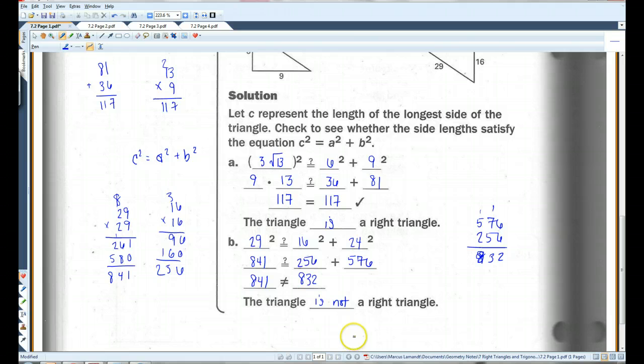so the triangle is not a right triangle. Alright? So, if the equation checks out, it's a right triangle. If it doesn't, it's not a right triangle.